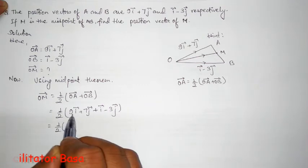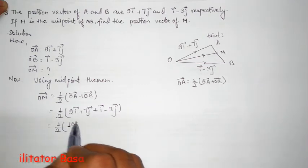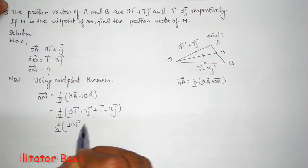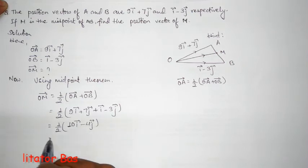It's 1 upon 2. 9i plus i is 10i, and 7j minus 3j is 4j vector. Now, 1 upon 2.